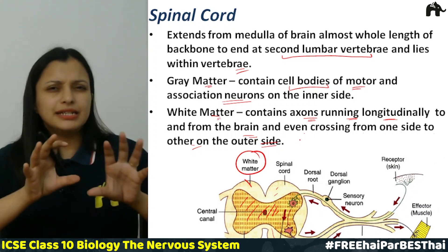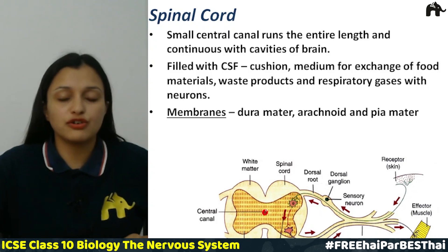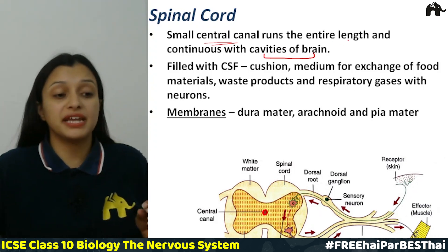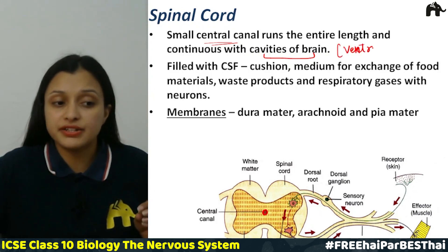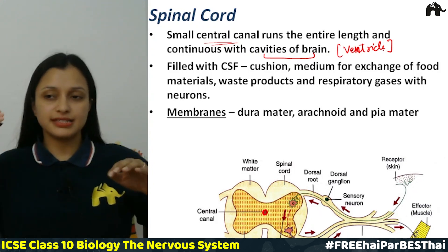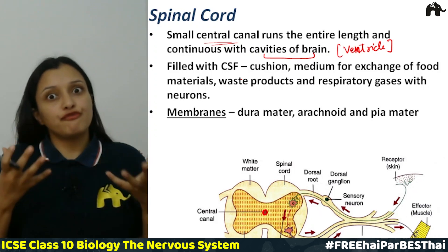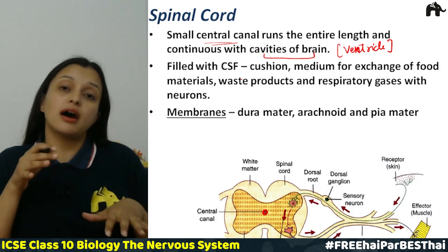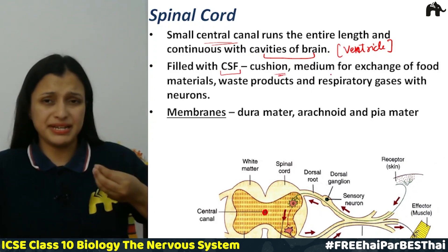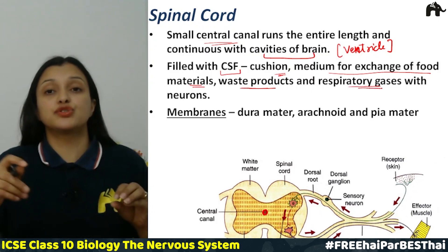The basic internal structure of the spinal cord is clear. There is a small central canal which runs the entire length of the spinal cord and is continuous with the cavities of the brain, called ventricles. The spinal cord is also filled with cerebrospinal fluid, which acts as a cushion.